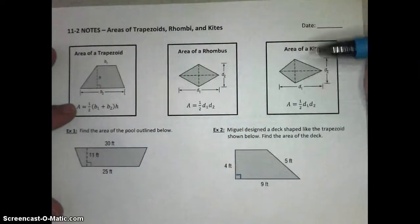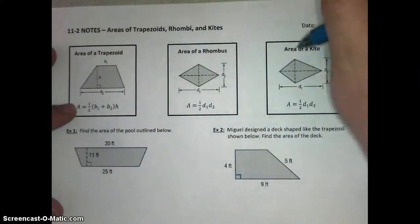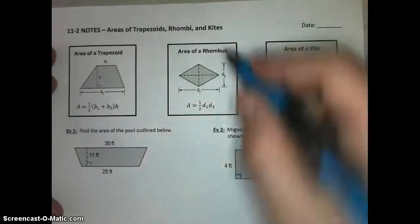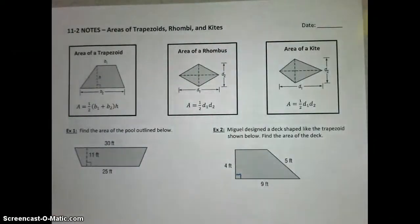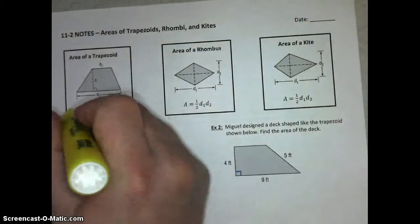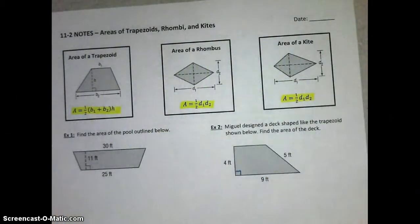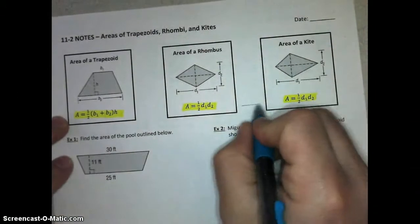Same thing for kites, half of diagonal 1 times diagonal 2. Again, we'll look at why those exist that way later on in class, but for right now, it's really important that you are able to use these formulas. Remember, rhombus and kite are really the same formula.